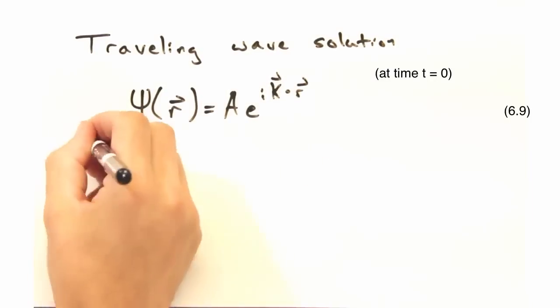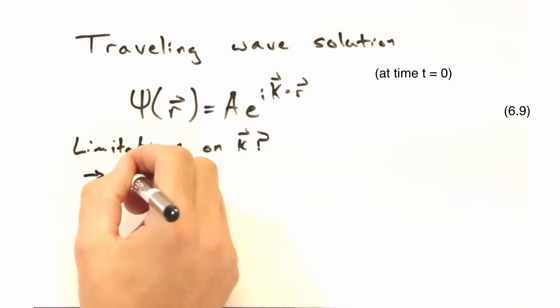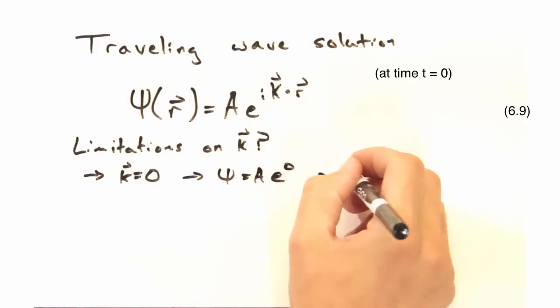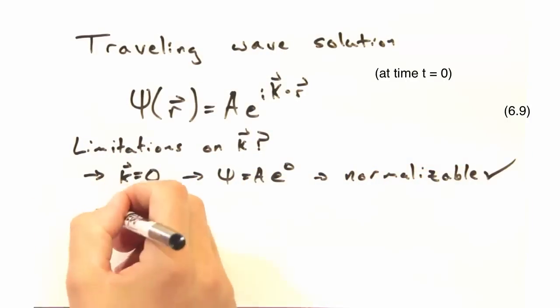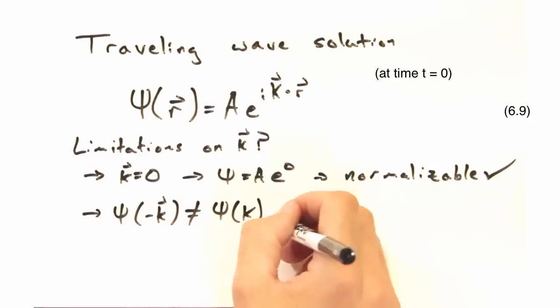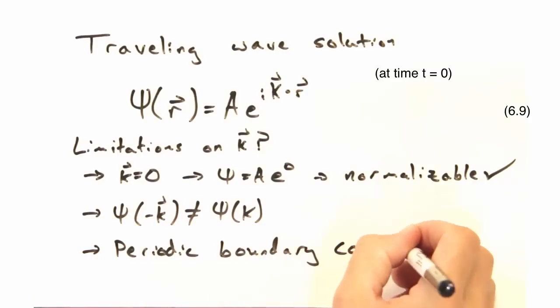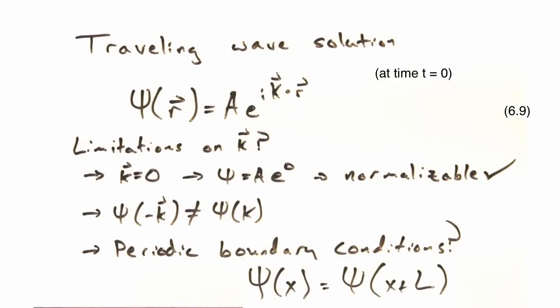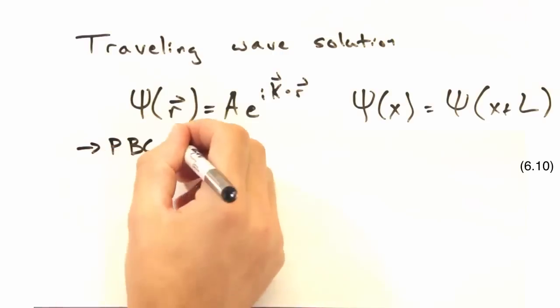And then what limitations will we have put on k? Well, I don't think we have to, because k equals 0 gives us something we can normalize. And negative k values give us unique wave functions. So then just like phonons, the spacing in k space will be 2 pi over l.